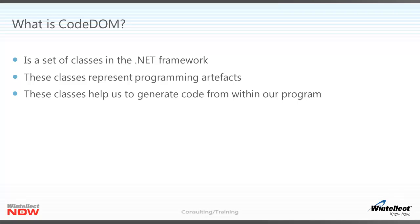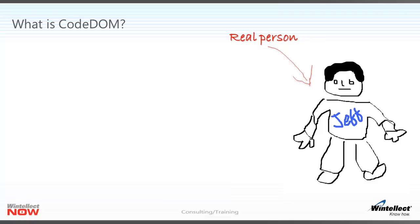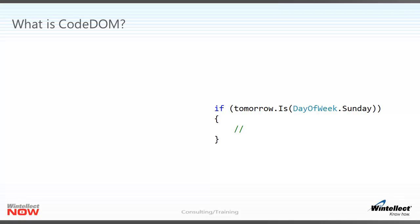Let's simplify all of this with an illustration. This is a person — a real person. A person has a name, he may or may not have hair, and his hair may have some color. On the left, you see a class that represents a person. An object of this class is not going to be a real person, but will come as close to being a real person as the class definition will allow.